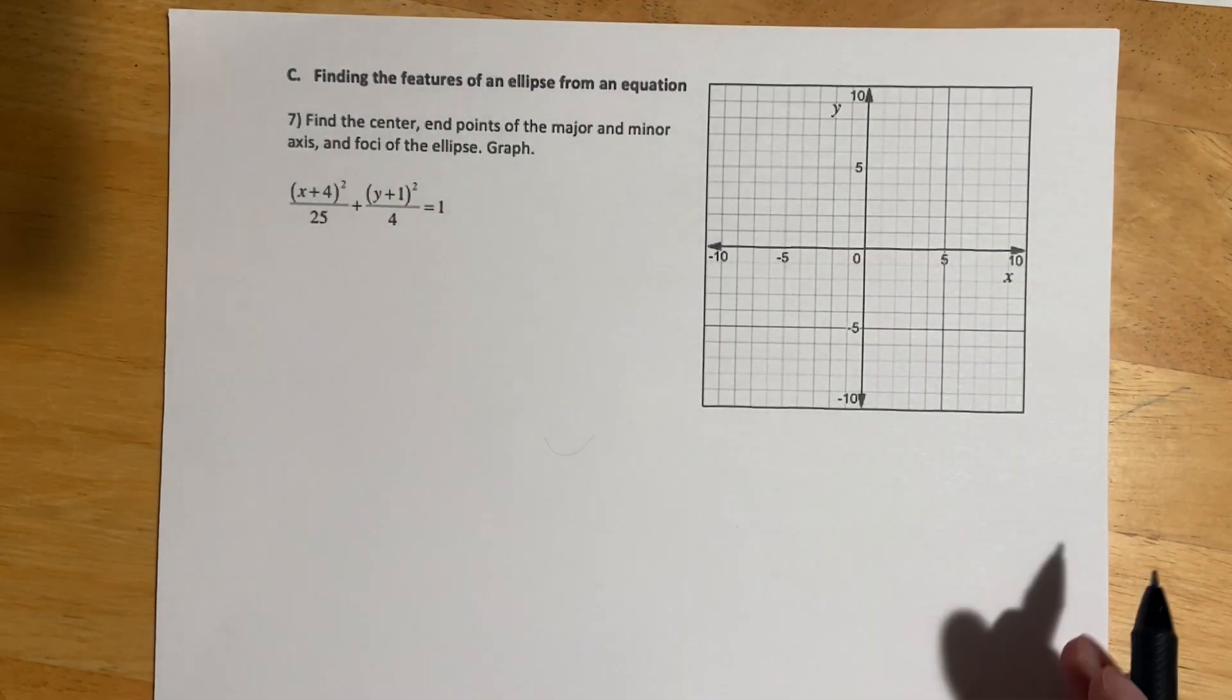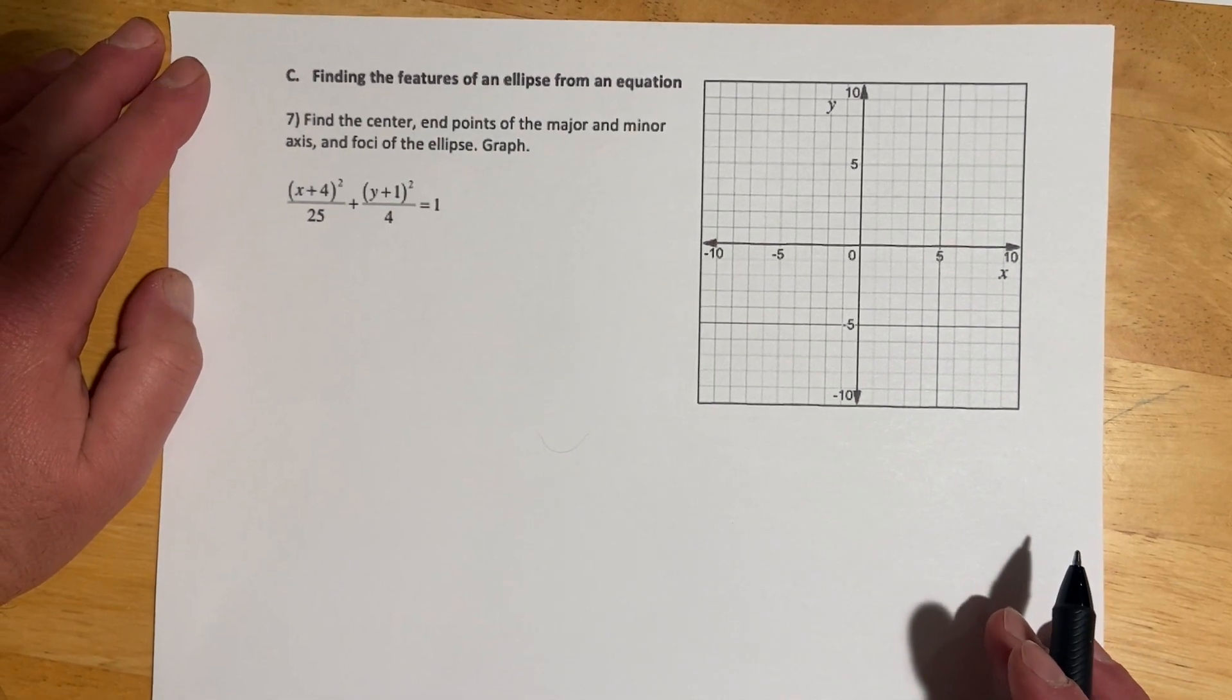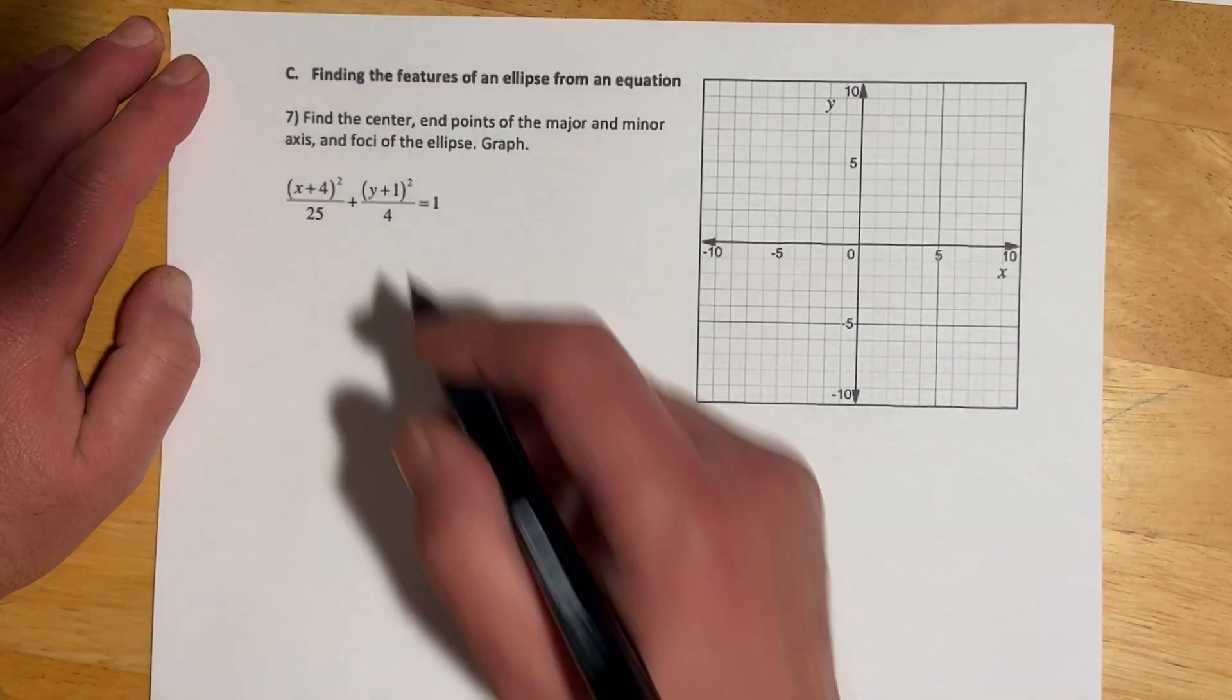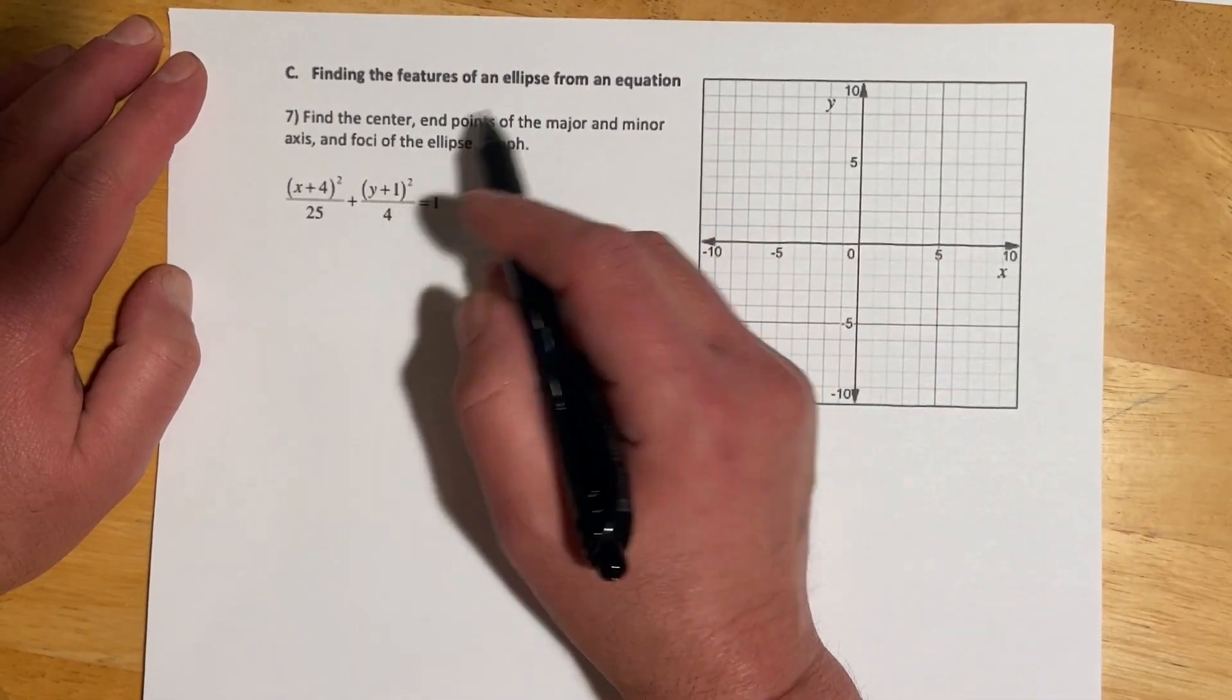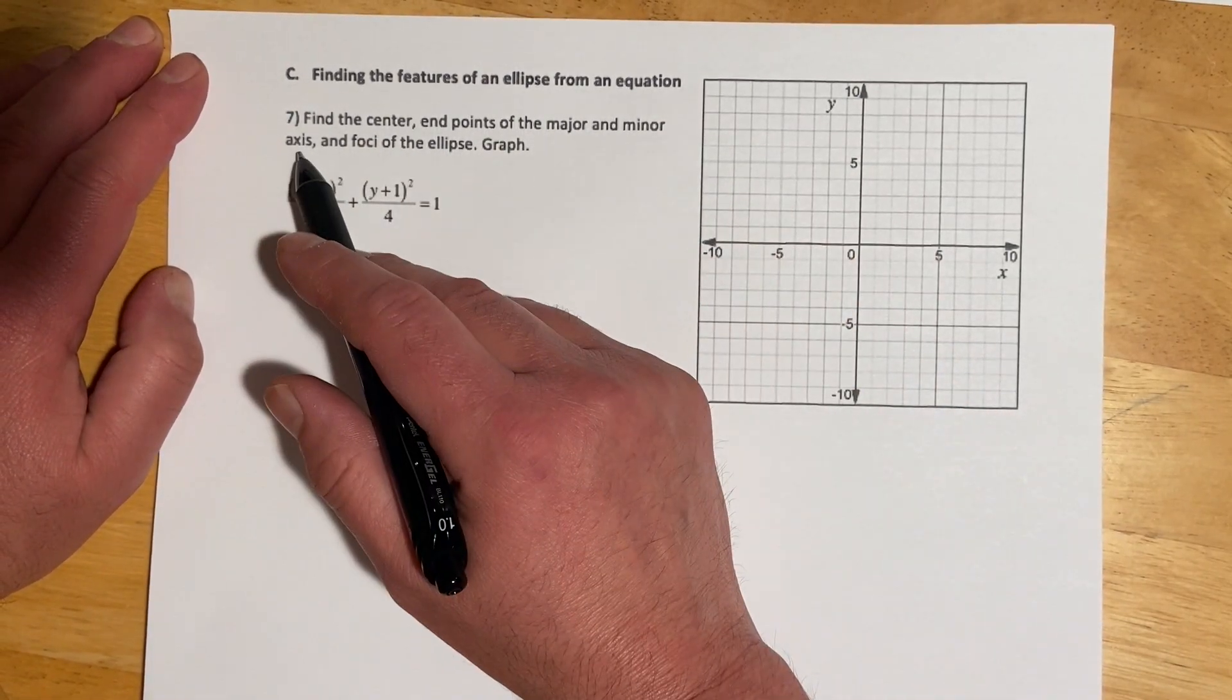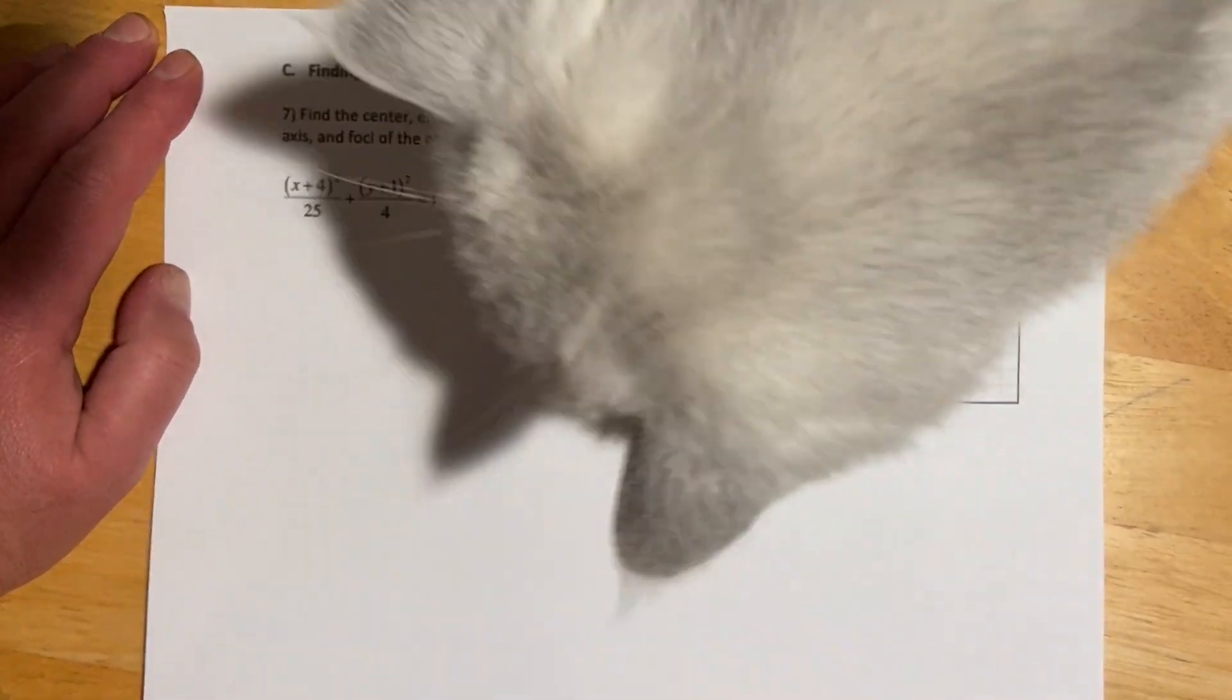Okay, so this is part two of the ellipse, and in this part we are looking for, we're given the equation, and then asked to find, along with graphing, center endpoints, major and minor axes, the foci, and the eccentricity.